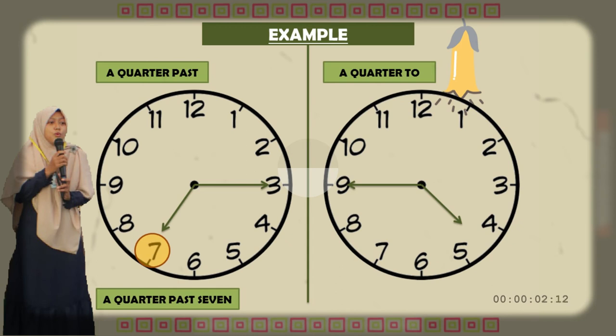Tulis dulu kata kuncinya yaitu a quarter to, baru menyebutkan jarum pendeknya. Let's see, jarum pendeknya menunjukkan bukan di angka 5, bukan di angka 4, tetapi di angka mendekati 5. Maka gunakanlah angka yang mendekati jarum pendek yaitu angka 5. How do we tell the time? A quarter to five. Tambahkan angka 5. Five, itu kan bahasa inggrisnya 5.